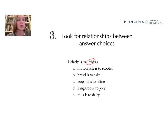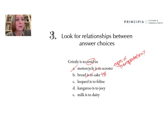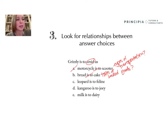For A — motorcycle is to scooter. This one is a little bit tricky; I can't necessarily create that typical analogy sentence. I do know they're both types of transportation, but because that relationship isn't super clear, this seems like it might not be my best option. For B — bread is to cake. I'm having a similar problem: they're both just kinds of baked goods, but there's not a super clear connection or relationship otherwise. So again, that doesn't seem like it's probably going to be my best answer.